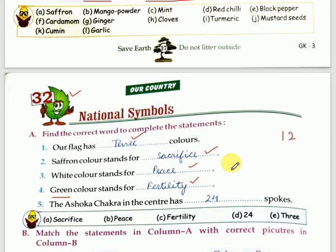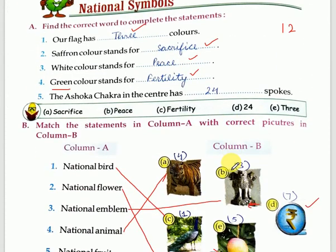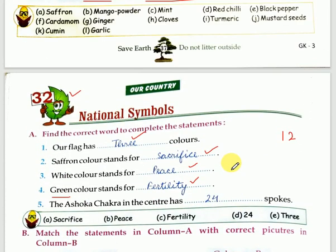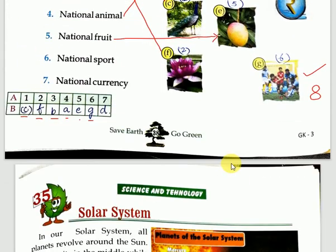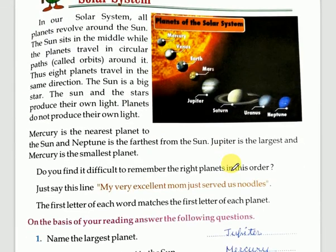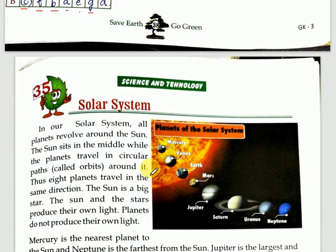We are done with chapter number 32. I hope this chapter is very clear to all of you. Now let's move to chapter number 35. Chapters 33 and 34 are not part of your syllabus, so we have directly come to chapter 35 — Solar System.